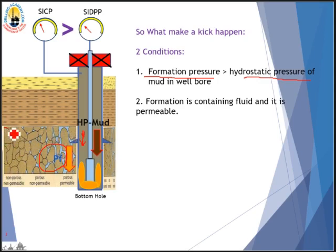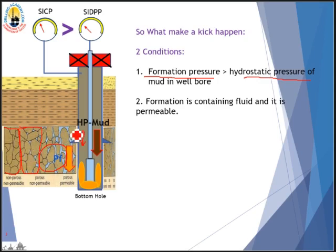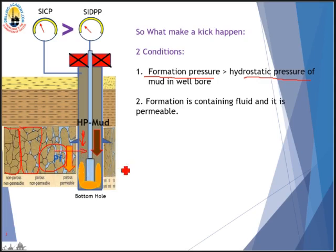Look at this formation: this part has no porosity and therefore no permeability at all. This part is porous but the pores are not connected, so it is also not permeable. However, this formation near the wellbore has connected pores — it is permeable. If the formation pressure is greater than the hydrostatic pressure of the mud in the wellbore, formation fluid will flow in, and that is called a kick.